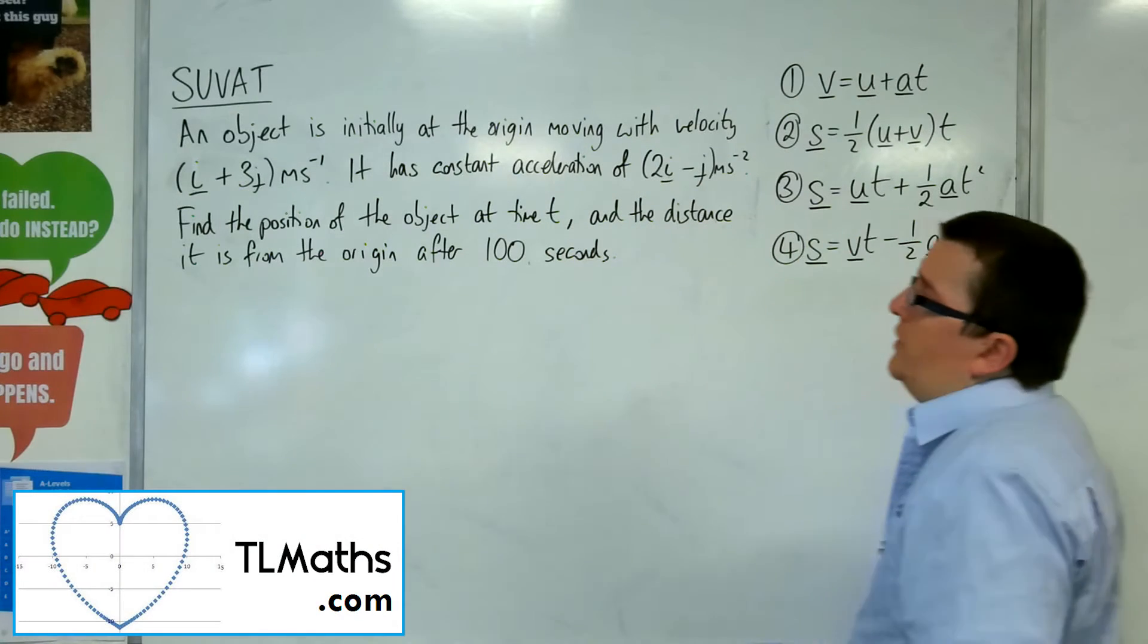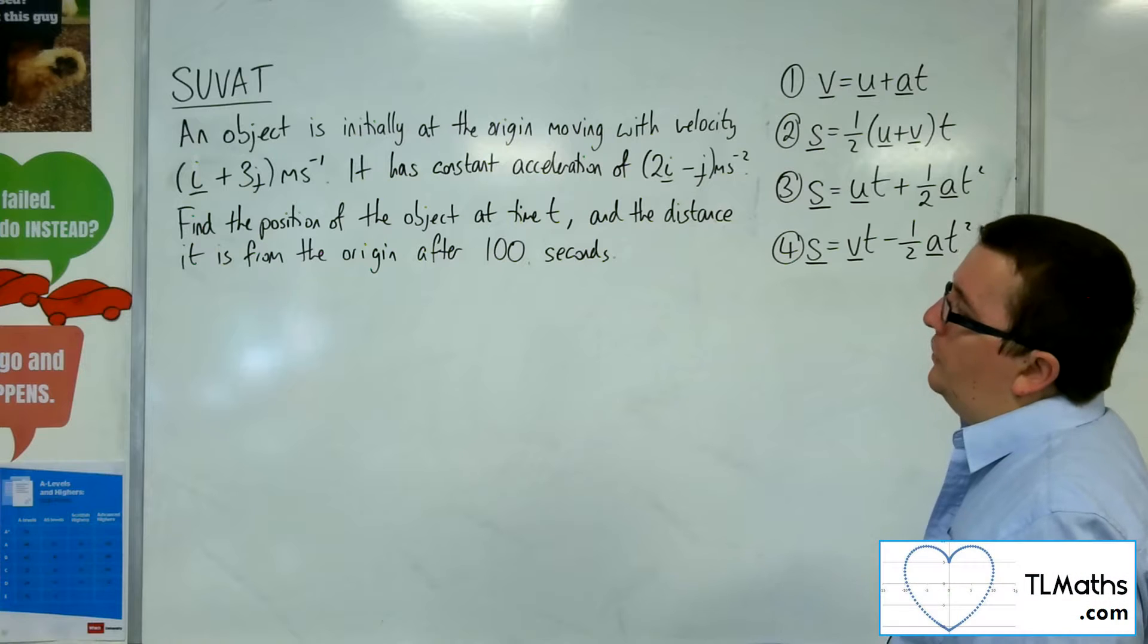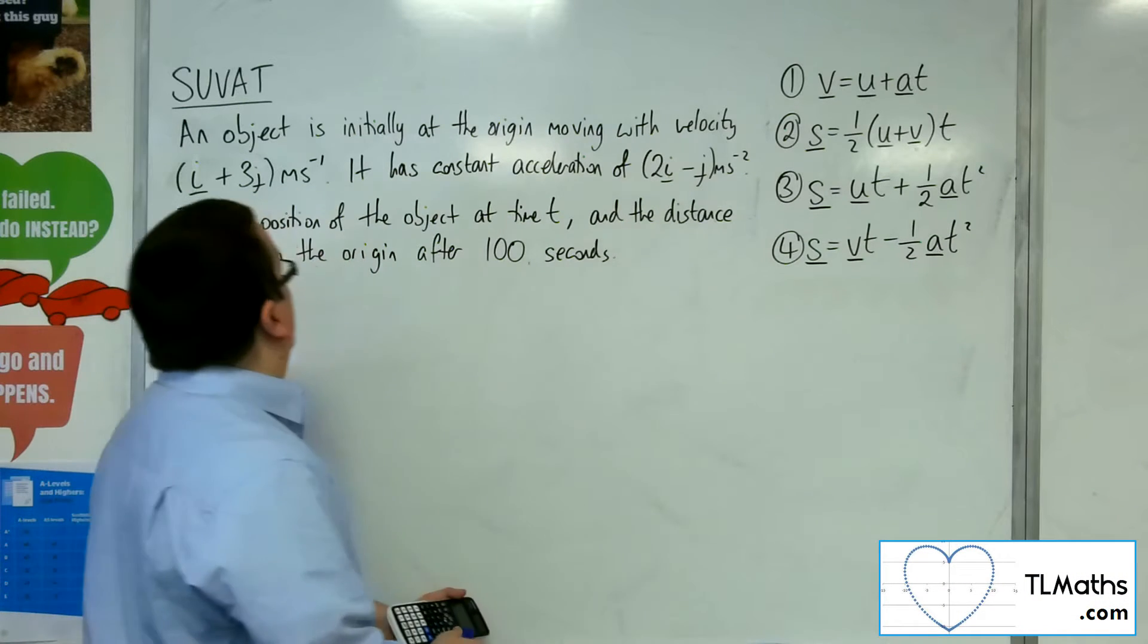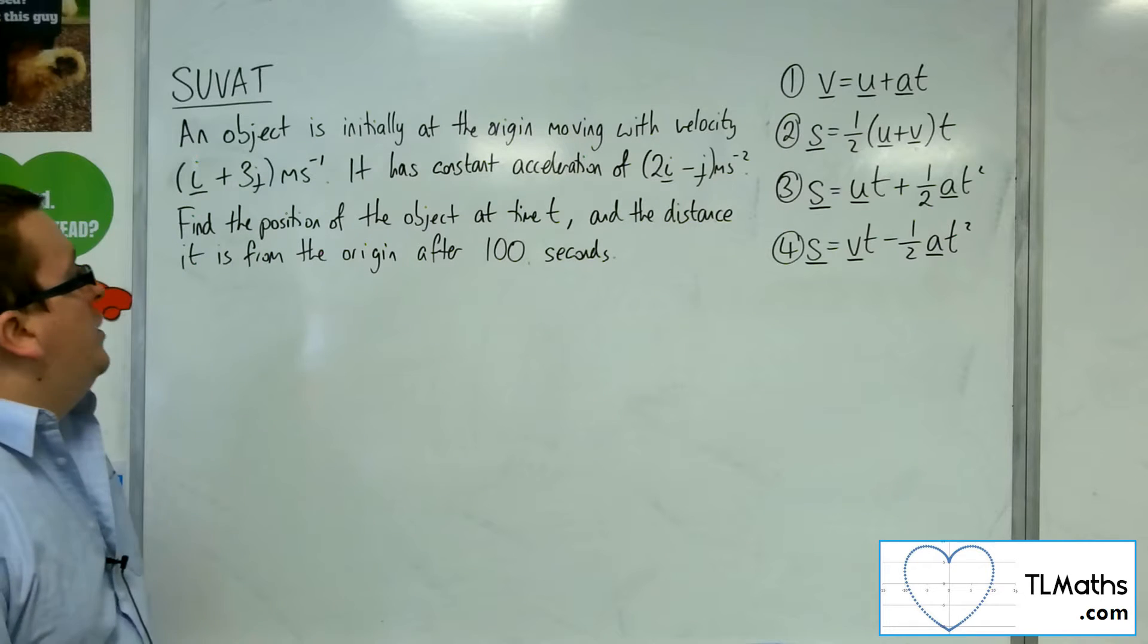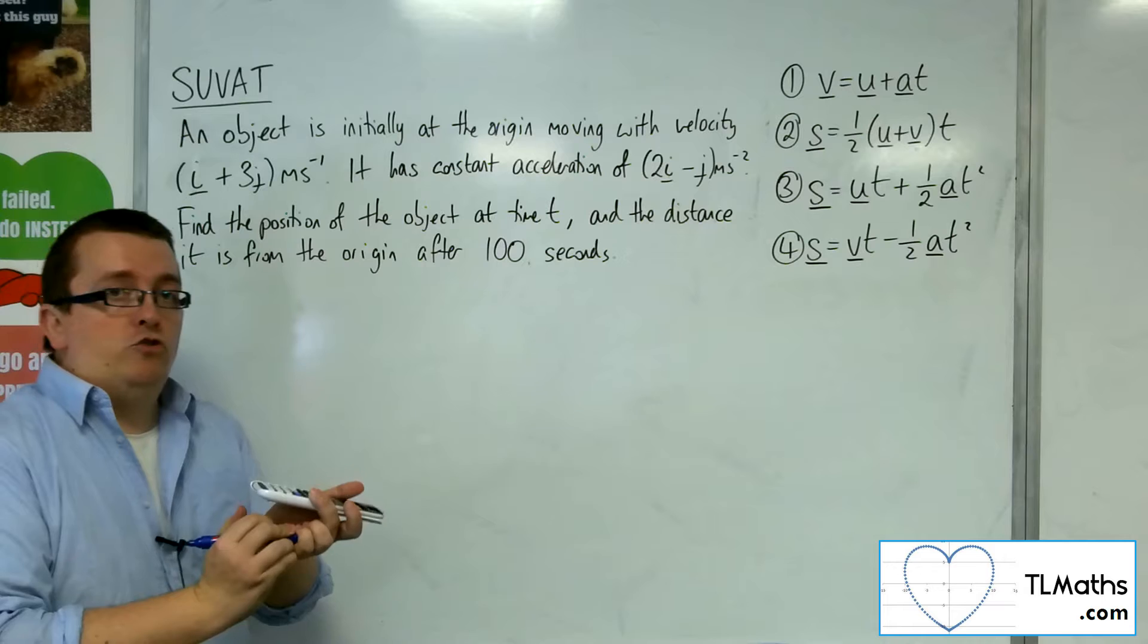In this video, an object is initially at the origin, moving with velocity i plus 3j metres per second. It has constant acceleration of 2i minus j metres per second per second. Find the position of the object at time t, and the distance it is from the origin after 100 seconds.